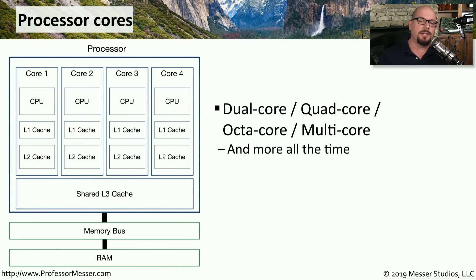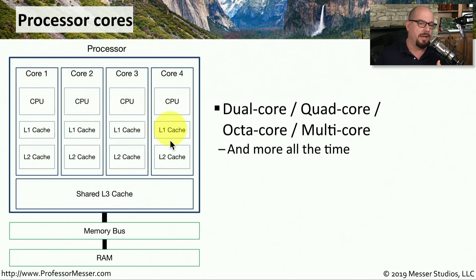Older CPUs were designed to process one transaction at a time, but we found ways to increase the number of CPUs available on one single processor. We call these separate CPUs separate cores of the processor, and there could be dual core, four cores, eight cores, or even more in modern PCs.